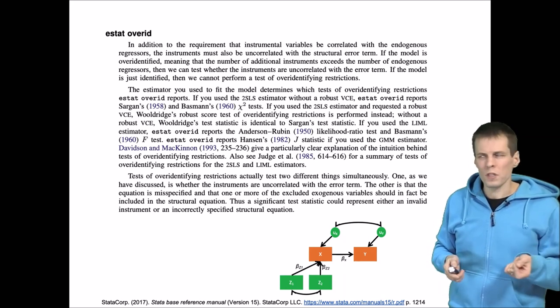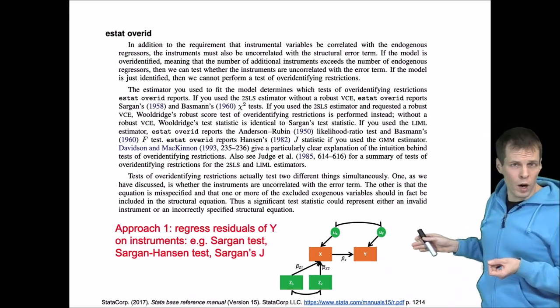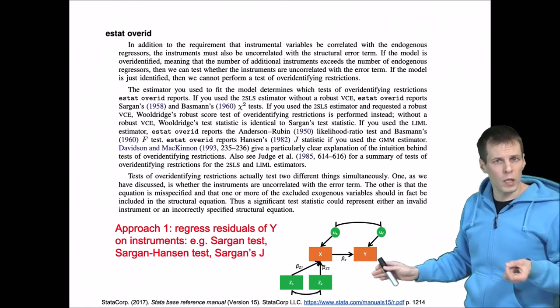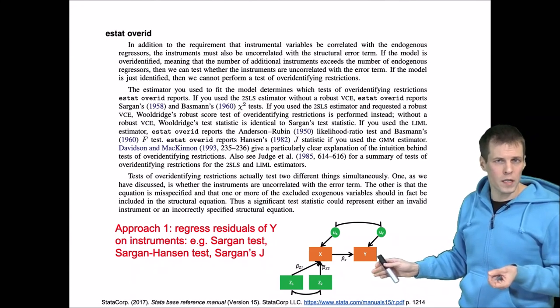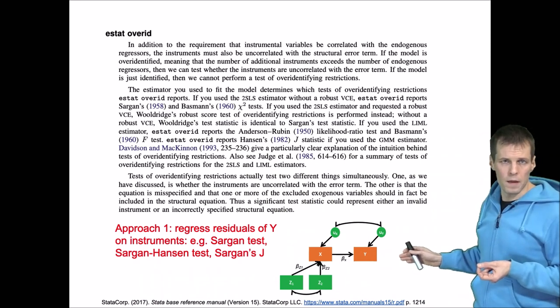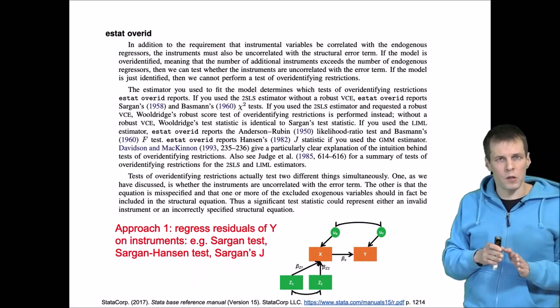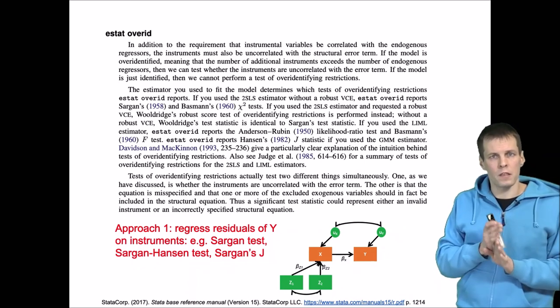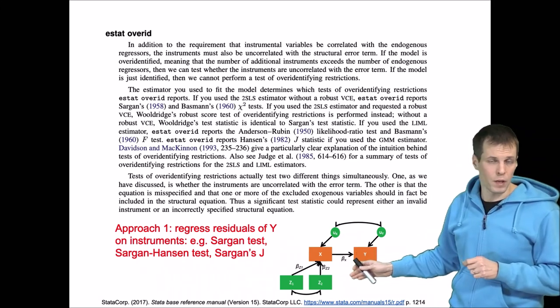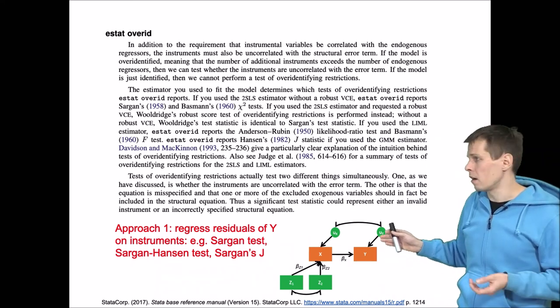So the first idea is that we regress, that we take the residuals of y and then we regress them on the instruments. If the instruments are not equally valid, then there will be some correlations between the instruments and residuals from this regression analysis. We test whether the R-squared of that regression is exactly zero. If it's not, then we conclude that these instruments are not equally valid because one of them explains the residuals more than the others. And this is the idea.